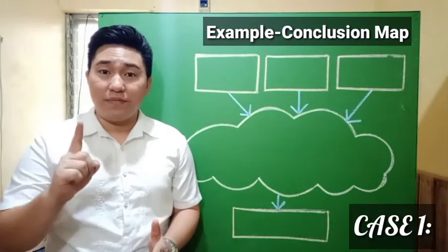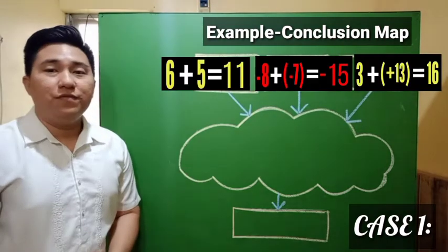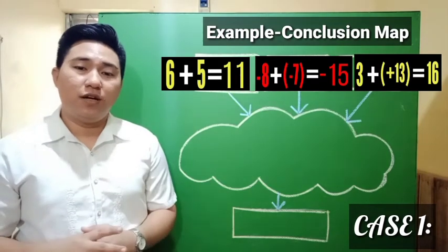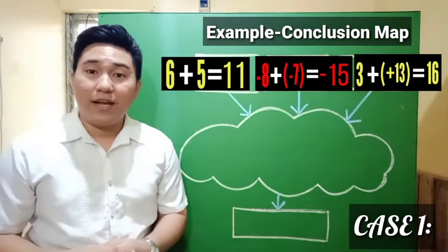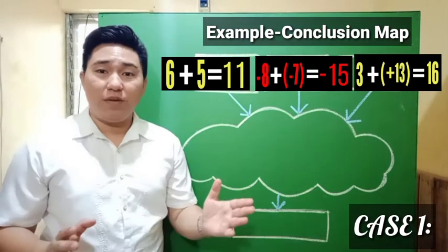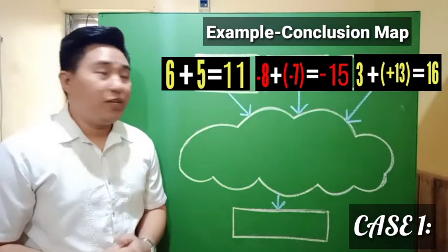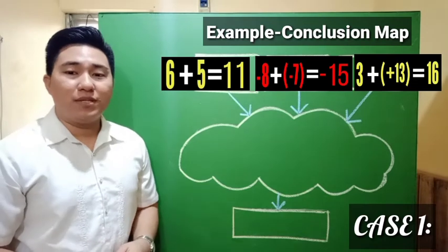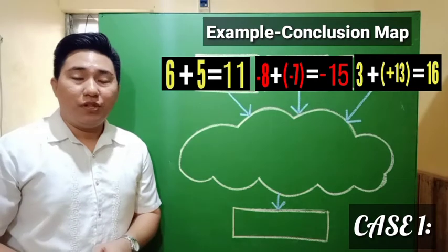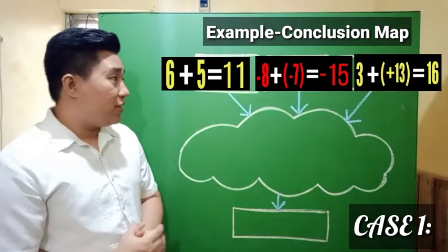Let's have case number one. Here are the examples. Example one: 5 plus 6 equals 11. Note that if a given number doesn't have any sign, then that number is considered positive — so positive 5 and simply 5 are just the same, they are both positive. Example two: negative 8 plus negative 7 equals negative 15. Example three: 3 plus positive 13 equals 16.